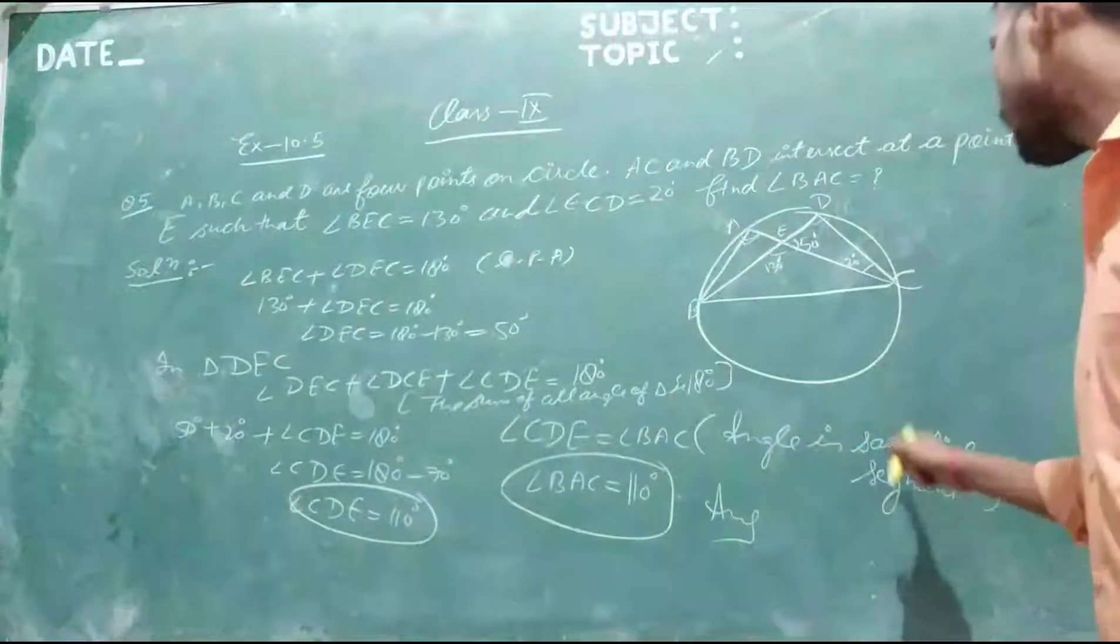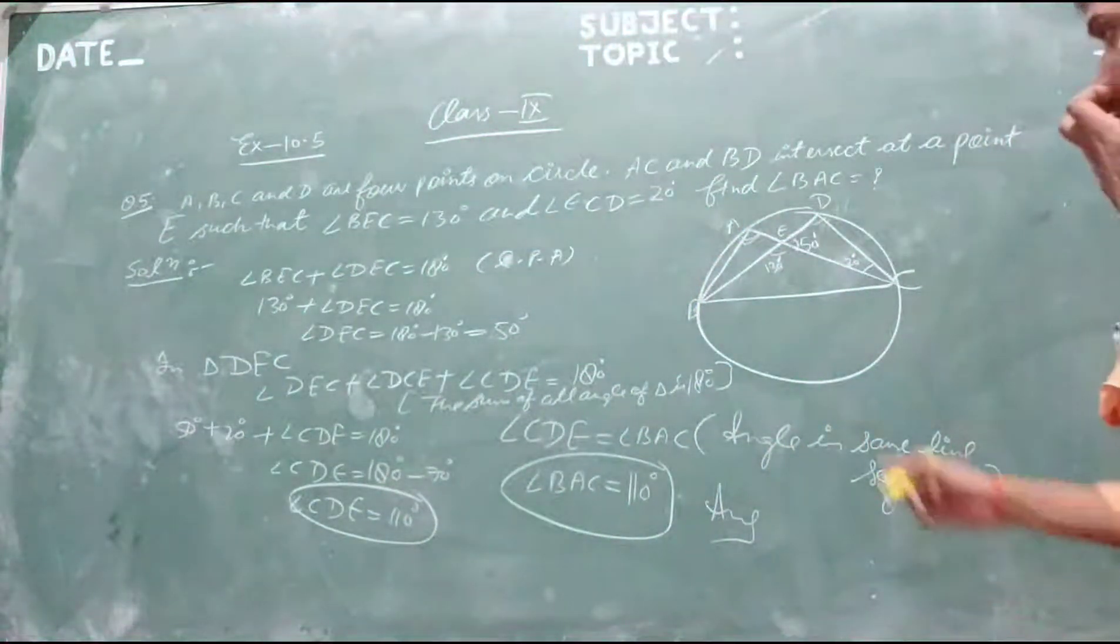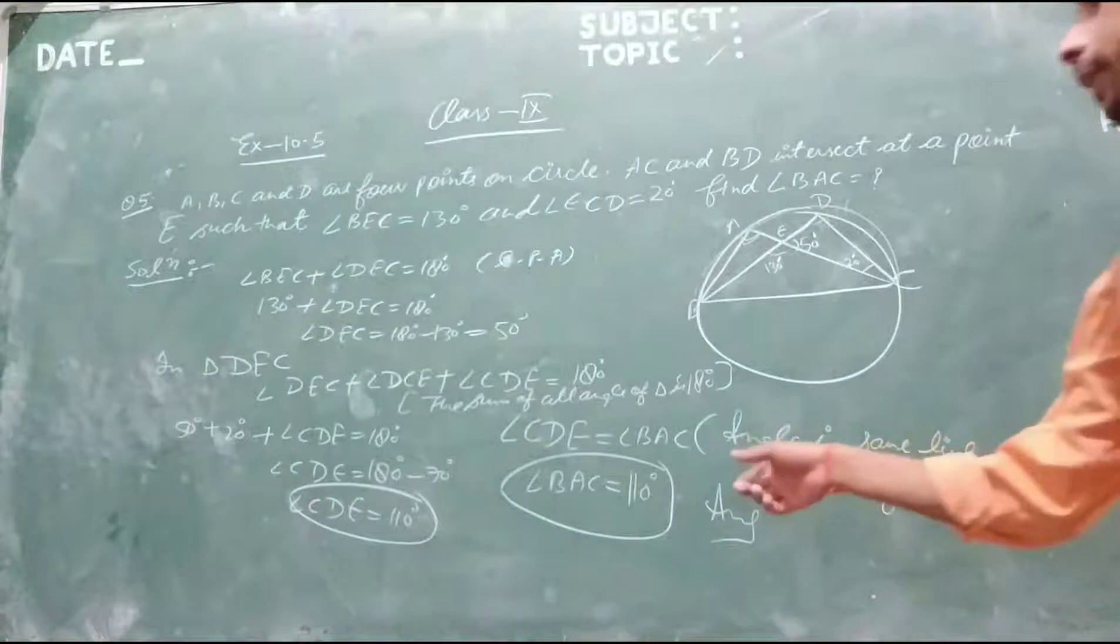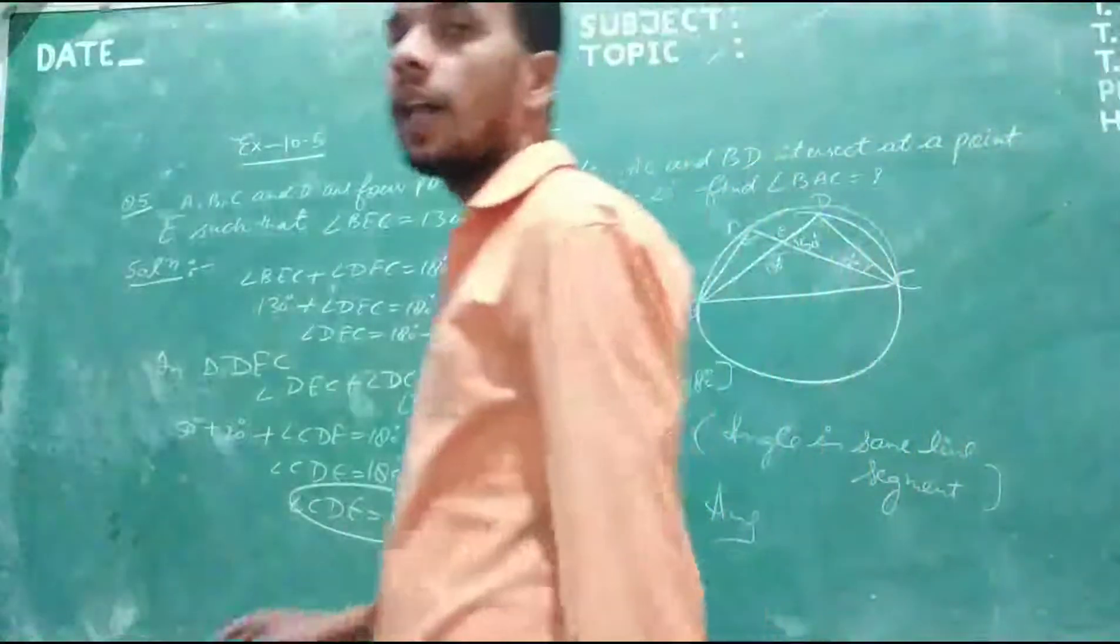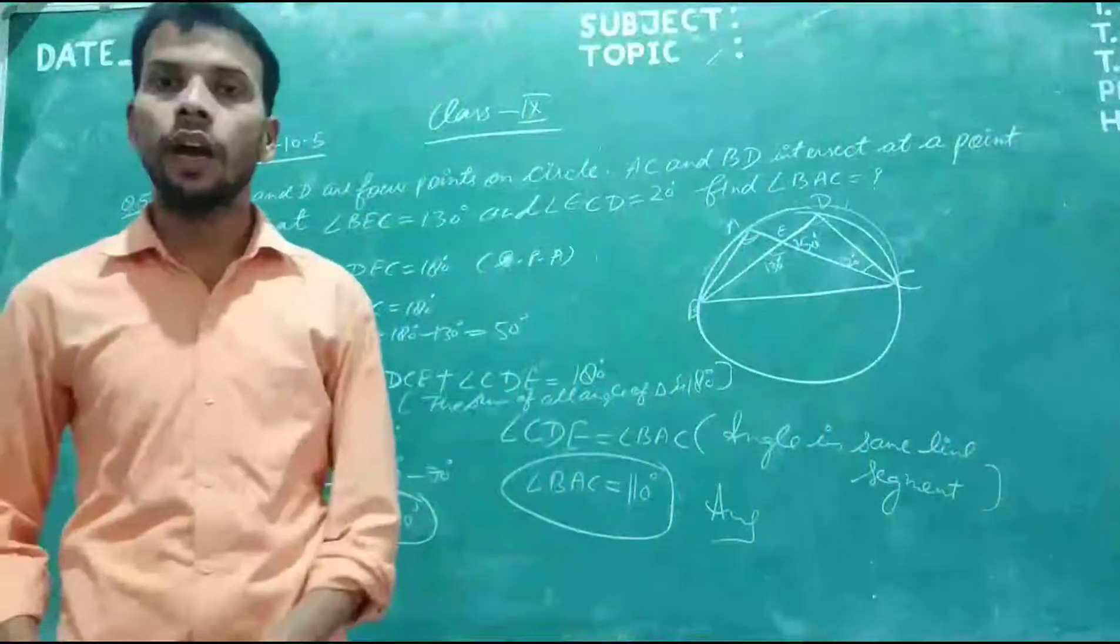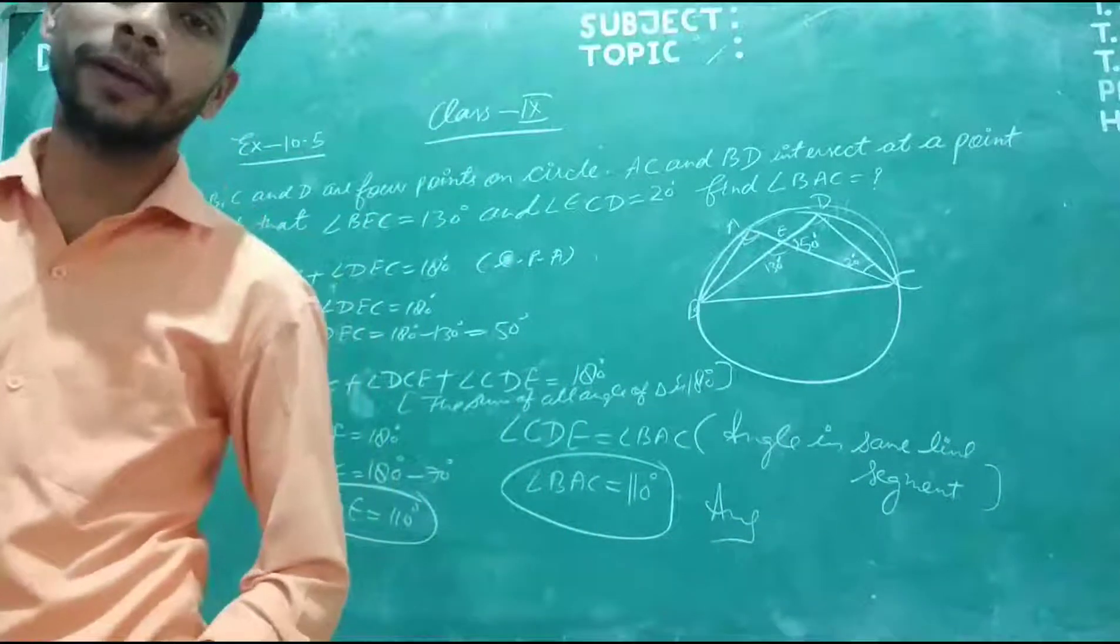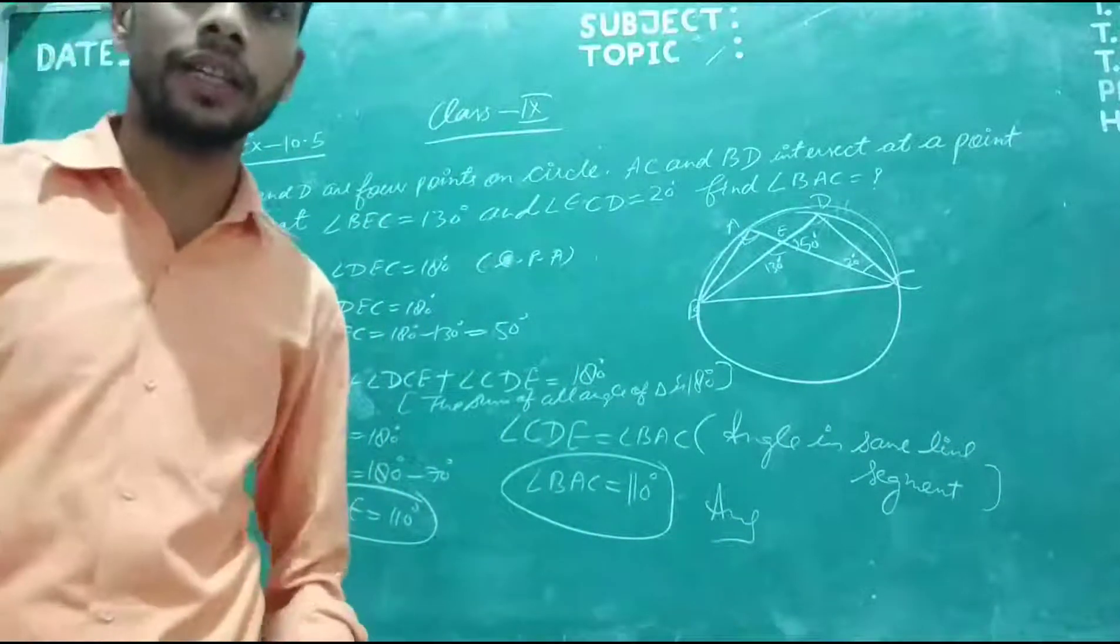The angle in same segment theorem gives angle BAC equals 110 degrees. I hope you understood this question well. In the next video lecture, we explain the next question. Thank you and have a nice day to all.